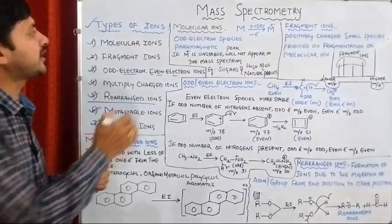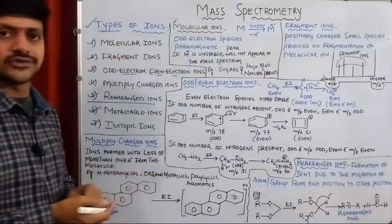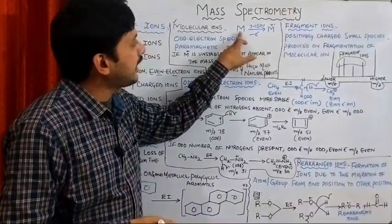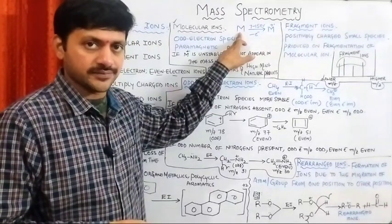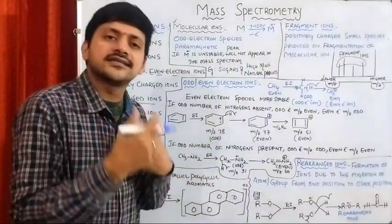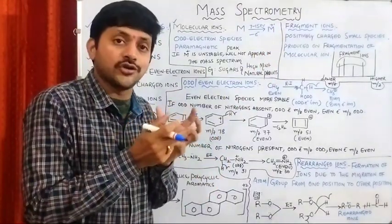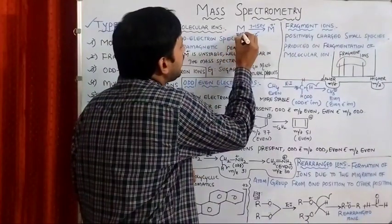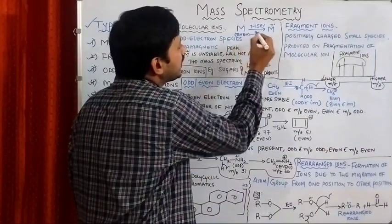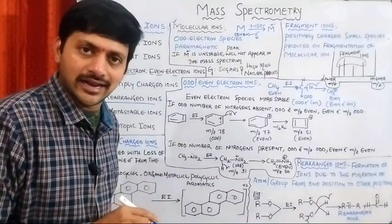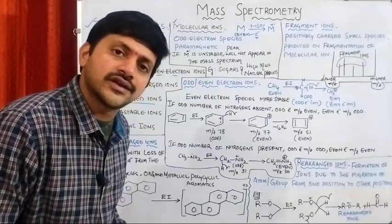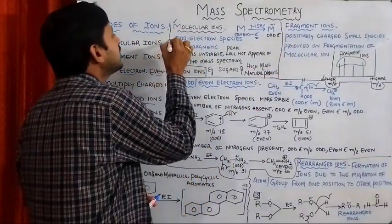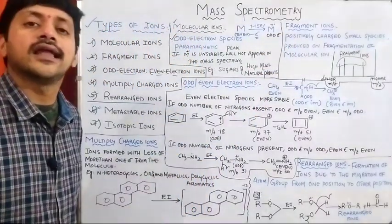Let's discuss the first type of ions: molecular ions. The molecular ion is produced by the elimination of a single electron from the molecule, which is in the vapor state. Organic molecules contain an even number of electrons; we are removing one electron. So whatever molecular ion we are getting, that is going to be an odd electron ion.